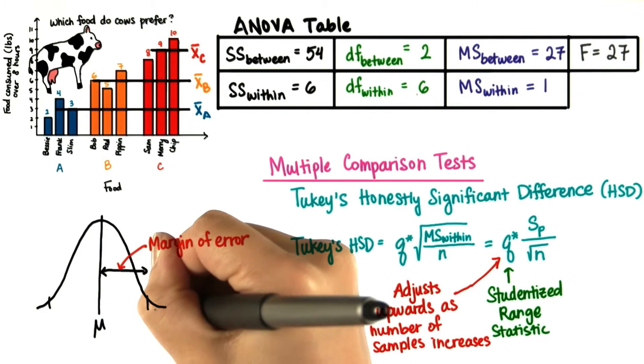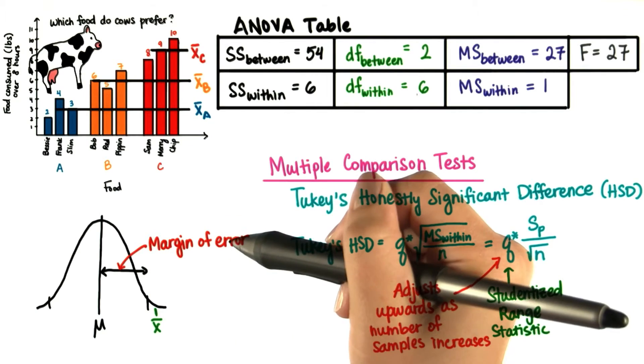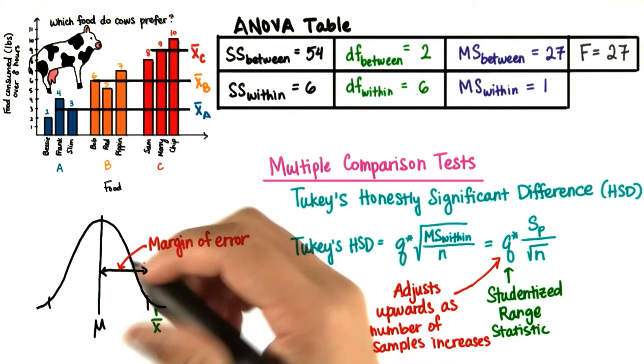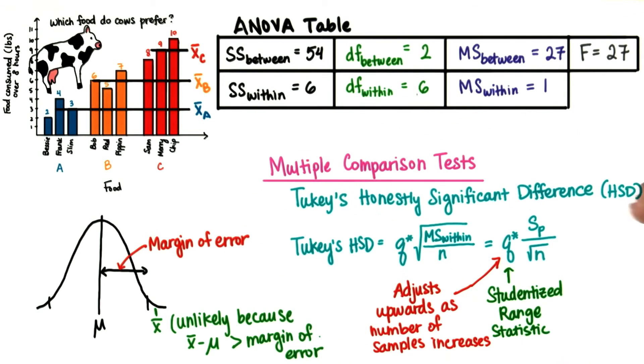Remember that if a sample mean was further away from the population mean than the margin of error, it was considered unlikely. Well, if two sample means are further apart than the Tukey's HSD, then that's considered honestly significantly different.